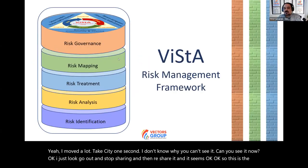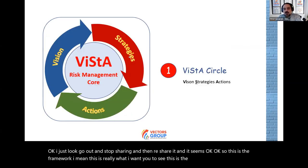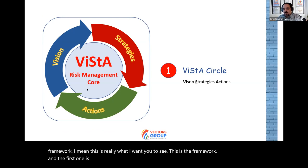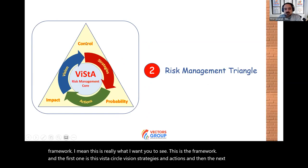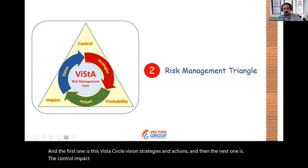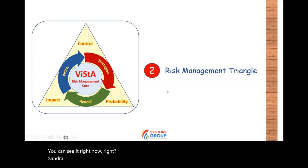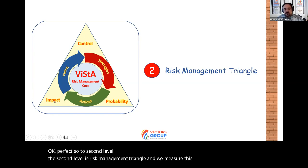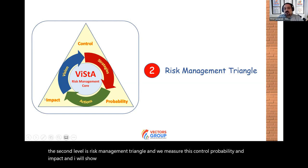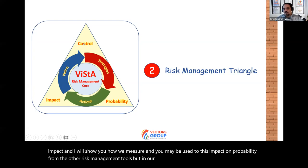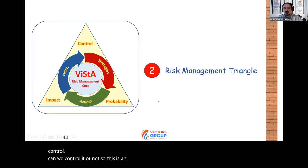The second level is the risk management triangle. We measure three parameters: control, probability, and impact. You may be familiar with impact and probability from other risk management tools, but in our model we add another parameter — the level of control. Can we control the risk or not? This is an important additional parameter in risk management.